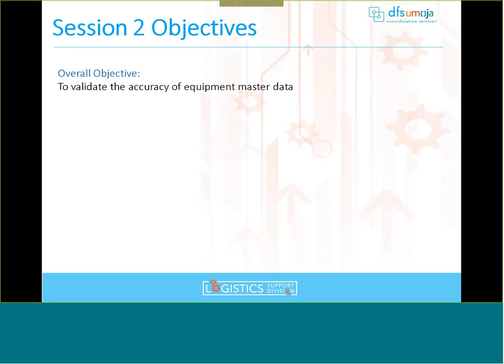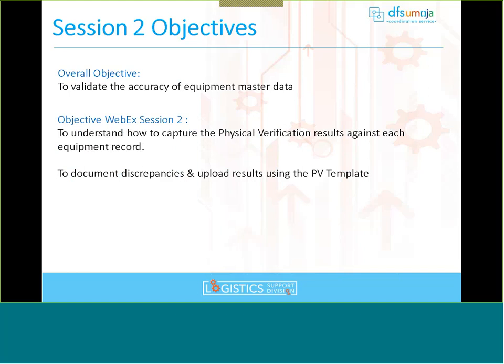The overall objective for these sessions is to validate the accuracy of equipment master data — which is why we're extracting equipment lists, reviewing discrepancies, and populating the physical verification template. Today's specific objective is to understand how to capture physical verification results against each equipment record, how to document discrepancies, and how to upload results using the PV template.